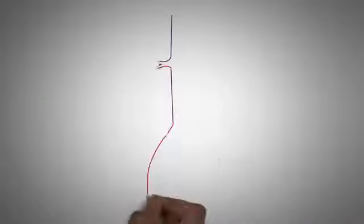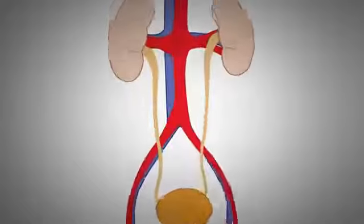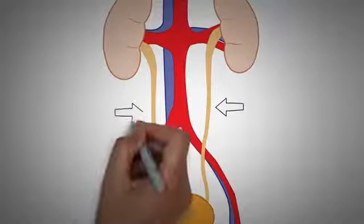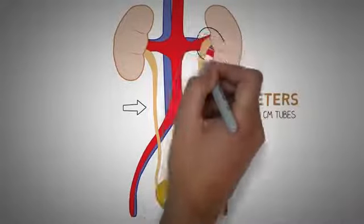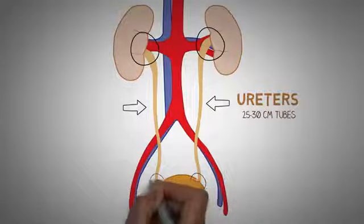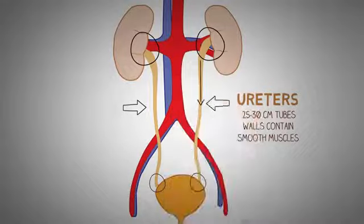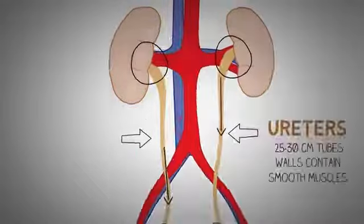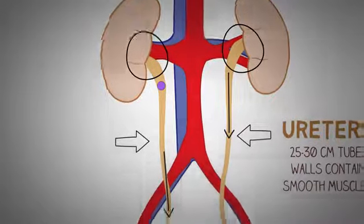Moving forward with the structure of the urinary system: the urine formed in the kidneys is passed down through structures known as ureters. Ureters are 25–30 cm long tubes that exit the kidney through the hilum and run down into the urinary bladder. The walls of the ureters have smooth muscles that help propel the urine forward. A kidney stone can move from the kidney and become lodged inside the ureter, blocking the flow of urine and causing sharp cramp-like pain in the back or lower abdomen — known as renal colic.